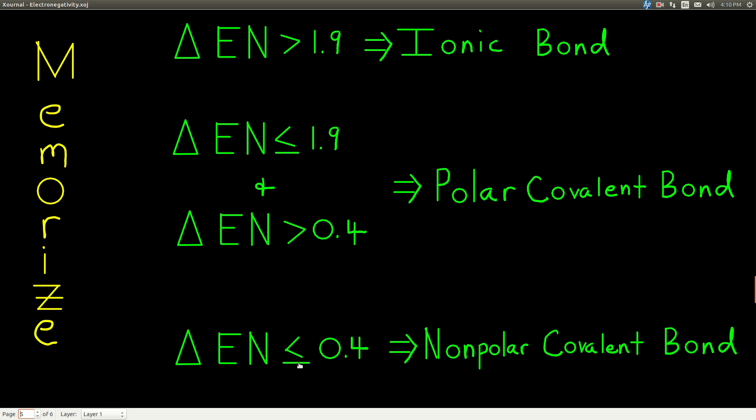Now, if the difference in electronegativity is smaller than or equal to 0.4, that's a covalent bond, but it's nonpolar. That just means that neither of the elements is really strong enough to pull the electrons appreciably towards itself, and that means that the electrons in that bond are not shifted one way or the other, meaning they're spread more or less evenly between the two atoms, and there's no negative end, no positive end, so it's nonpolar. So memorize these numbers, these definitions.